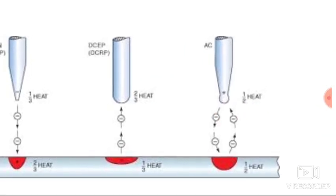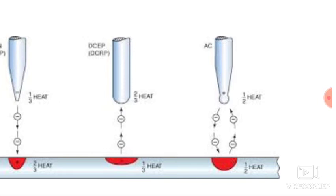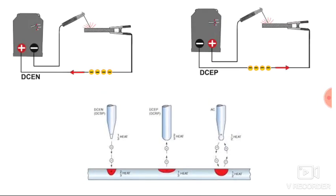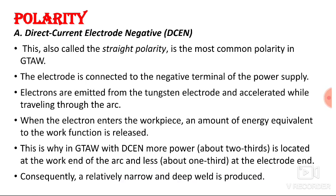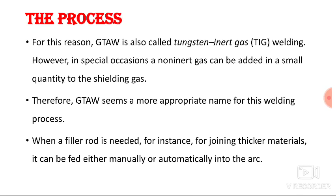With AC current, since it is alternating current, we get half the heat at the electrode and half at the workpiece, and at the same time we also get a cleaning action.